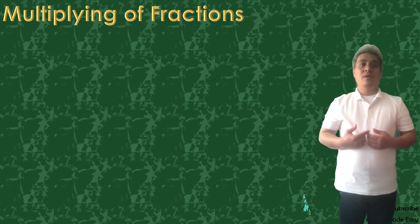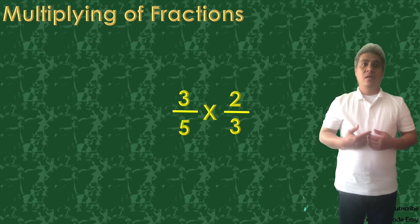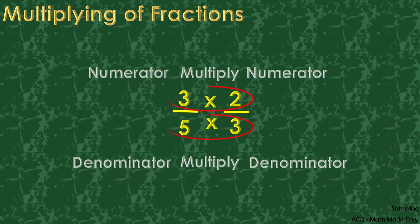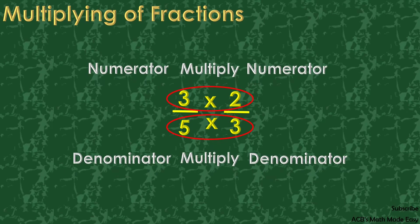Our first example is 3 over 5 times 2 thirds. In multiplying proper fractions, just multiply the numerator to the numerator and the denominator to the denominator.